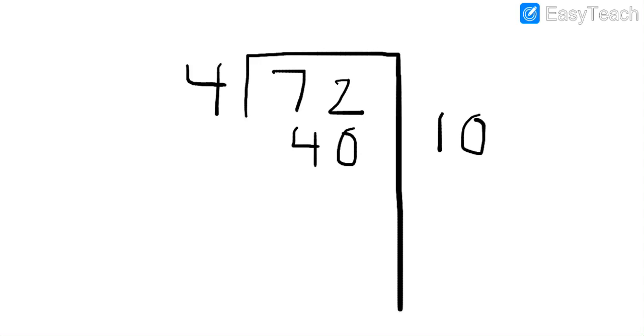Our next step is to subtract those two numbers. So we're going to subtract 2 minus 0 is 2. 7 minus 4 is 3. We have 32 left.